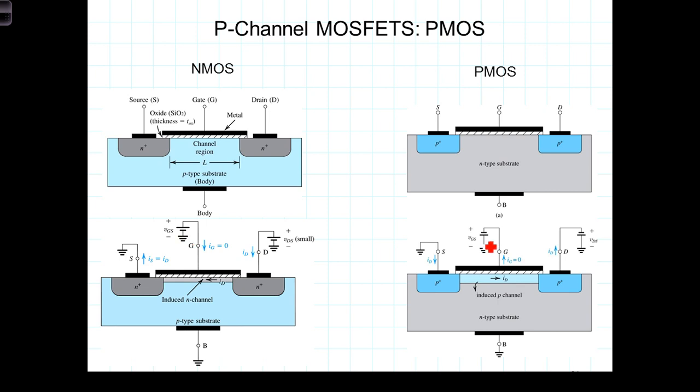In P-MOS transistors, a negative voltage is applied to the gate, repelling electrons away from the area under the gate, creating a depletion region free of electrons. This negative gate voltage then also attracts holes from the heavily doped source and drain areas to create an inversion layer, or channel, of holes. The value of the gate voltage required to form this channel is once again referred to as the threshold voltage.